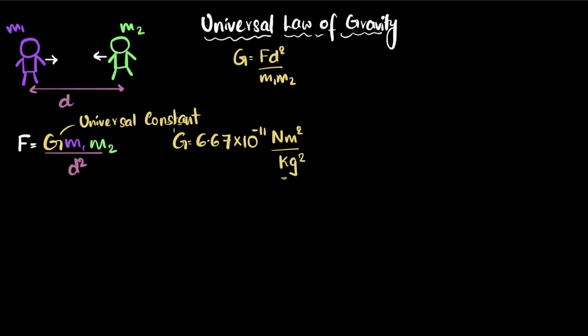It's called a universal constant because the value is the same anywhere in the universe. And now if you're wondering, if everything attracts everything, why don't we feel this force? That's because of G. Because this force of gravity is incredibly weak, and therefore we don't feel it.